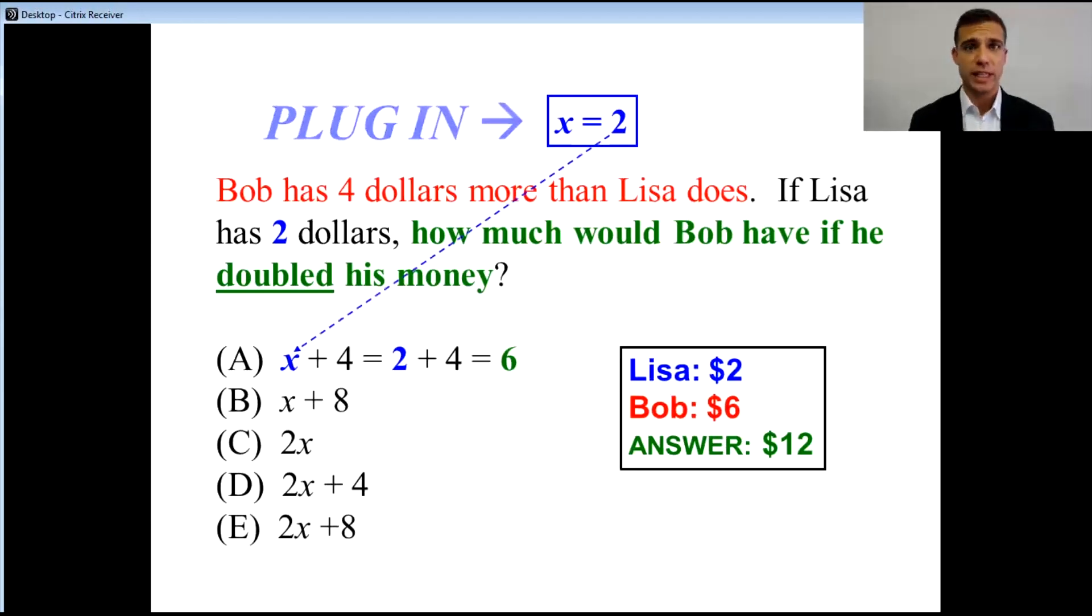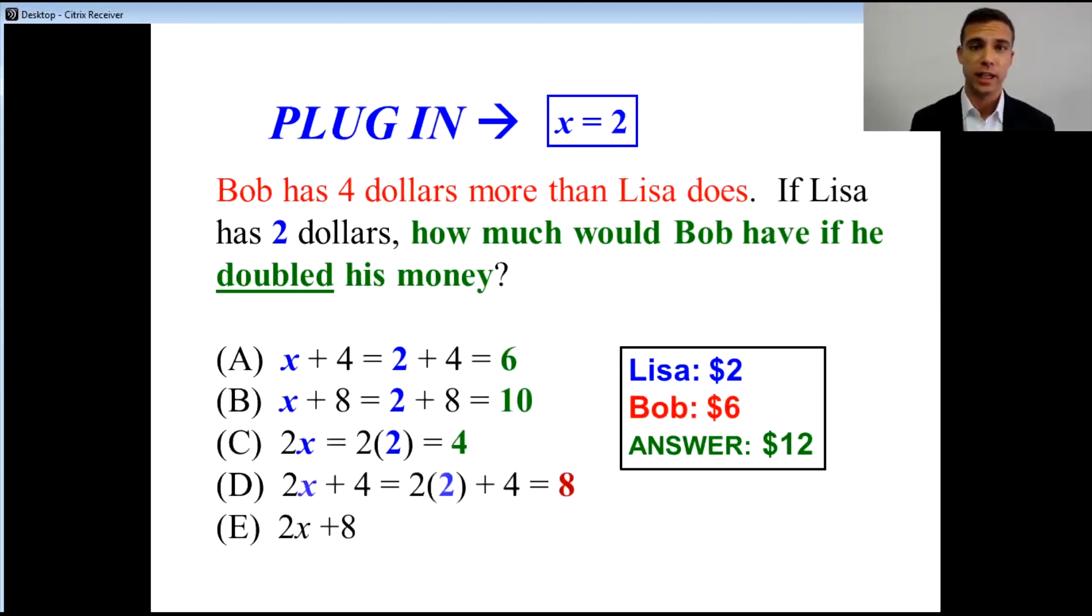If we put it in for A, we get 6. For B, we get 10. For C, we get 4. For D, we get 8. And finally, we put it in for E, and that's right, we get 12.